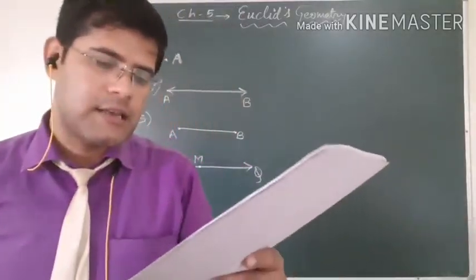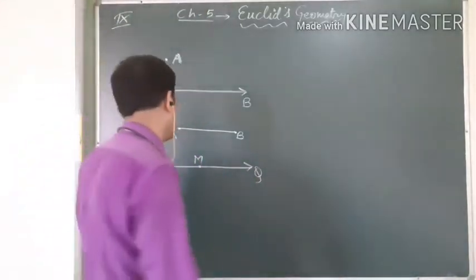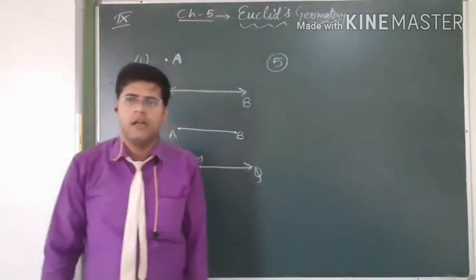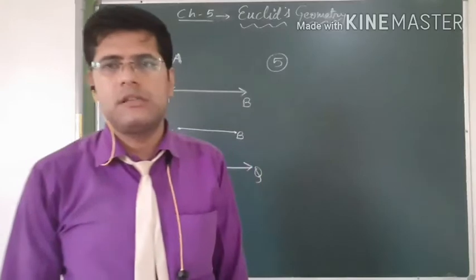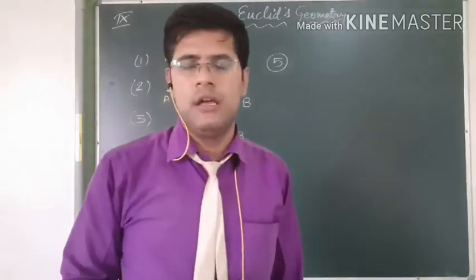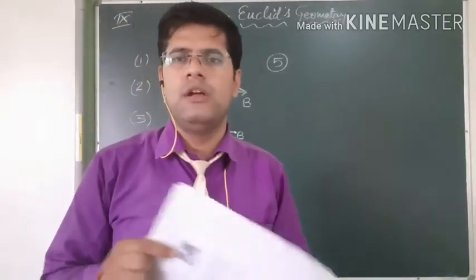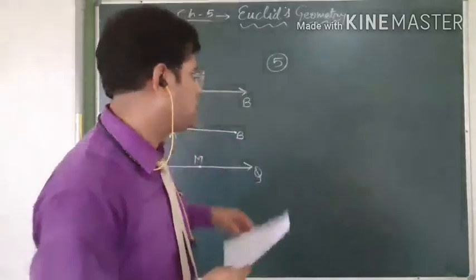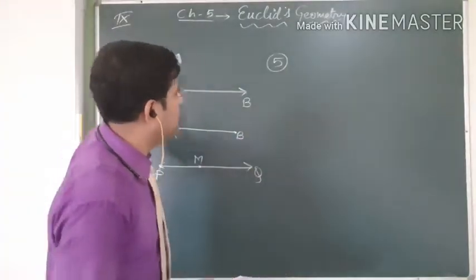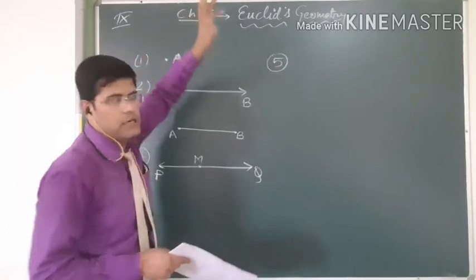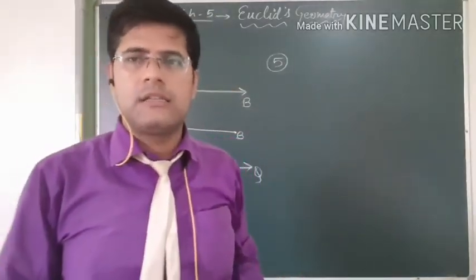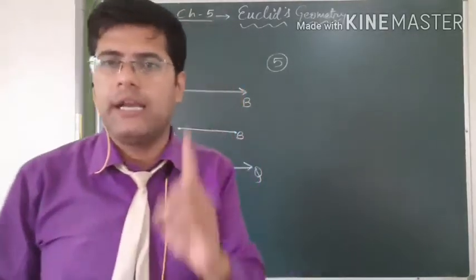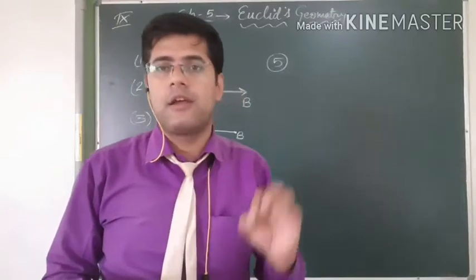The fifth definition: a surface is that which has length and breadth only. A surface has only two dimensions — length and breadth. This paper has length and breadth only; it has no height, no depth. When we talk about this board, it is used as only length and breadth. Just as a line has no breadth, a surface has no height.